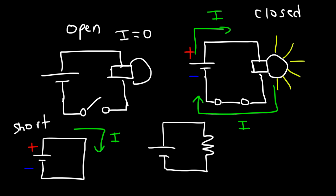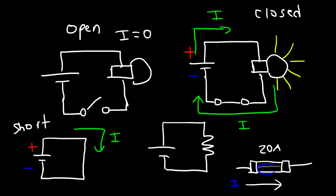Because short circuits are so dangerous, you need to have elements in a circuit to prevent these things from happening. One device you could use is called a fuse. A fuse has a very thin metal filament on the inside. If this fuse is rated to be a 20 amp fuse, and 20 amps or more of current flows through it, the fuse is designed to snap — the wire breaks, the connection is broken, and it creates an open circuit. This prevents other devices in the circuit from being damaged due to the high currents. So a fuse is designed to protect a circuit from dangerously high levels of current.